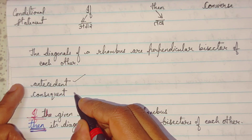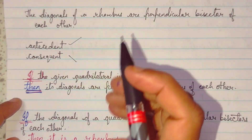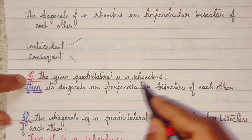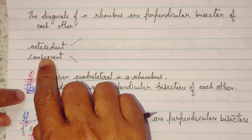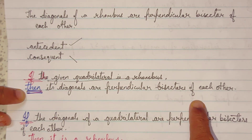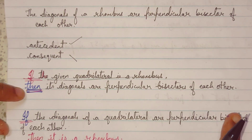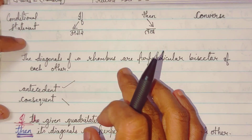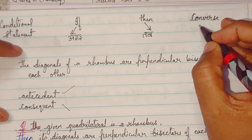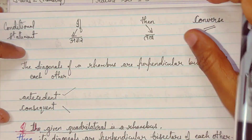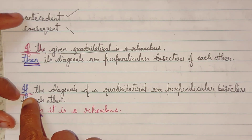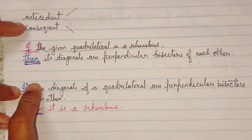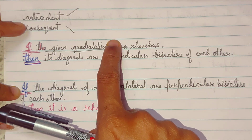What is antecedent and consequent? The statement written after 'if' is said to be the antecedent, and the statement written after 'then' is the consequent. Now, if we have to write the same statement in converse form — converse means reverse — we swap the antecedent and consequent.